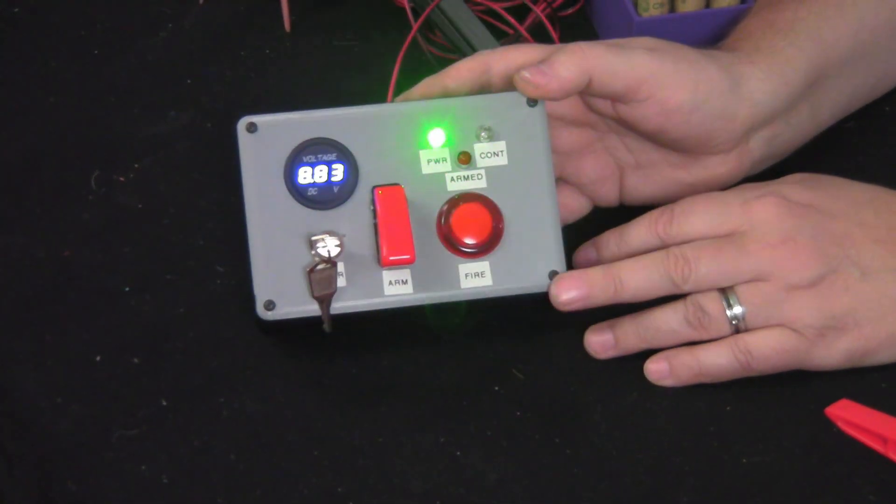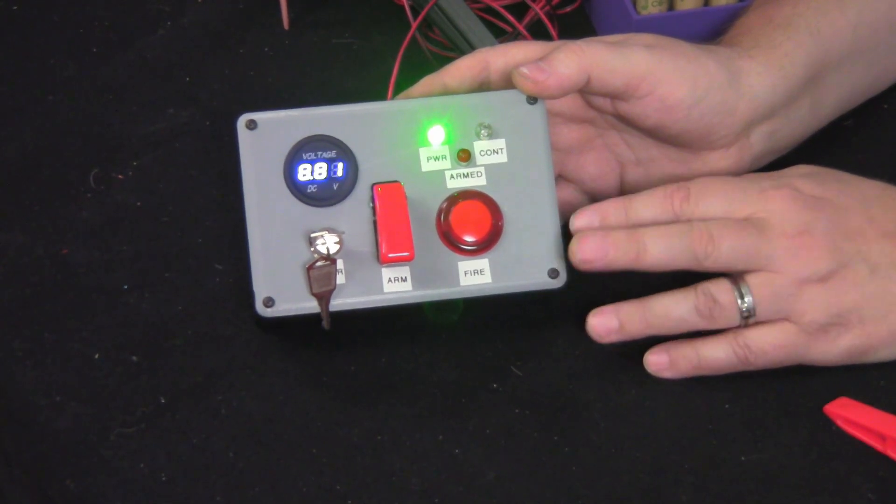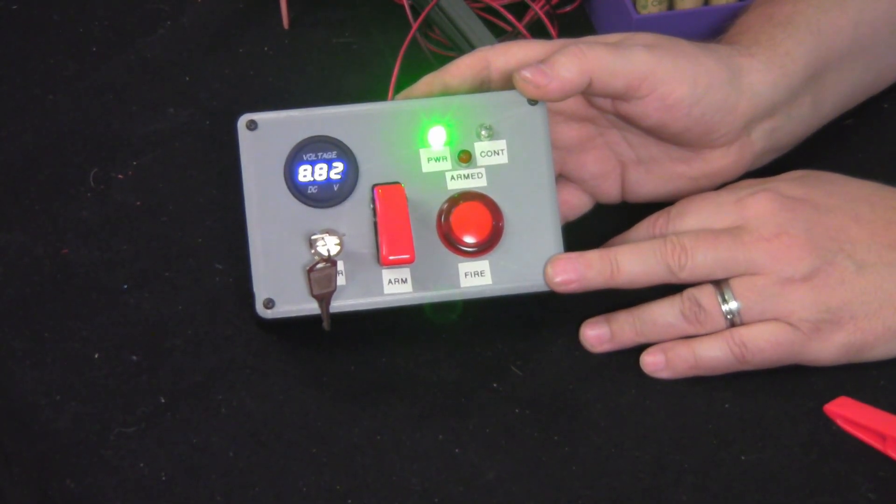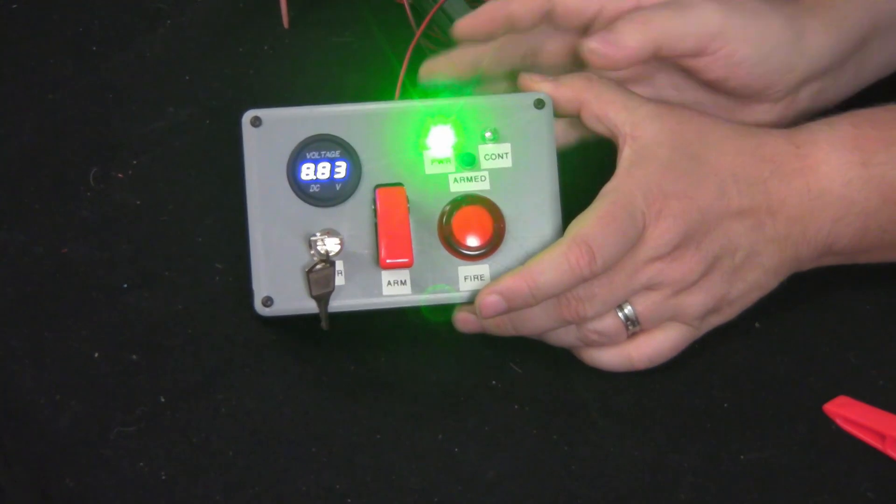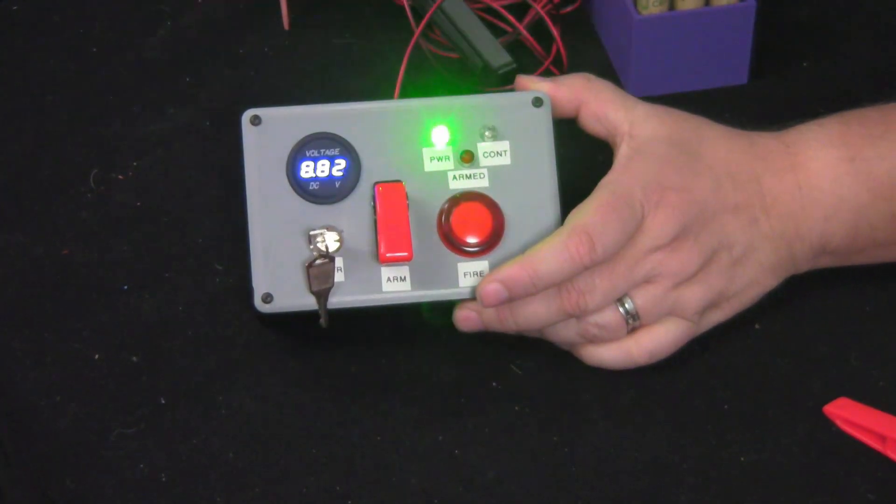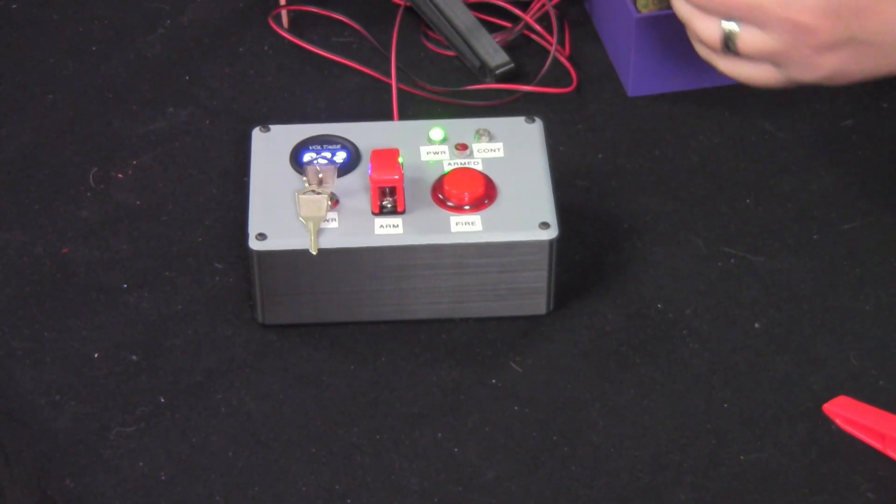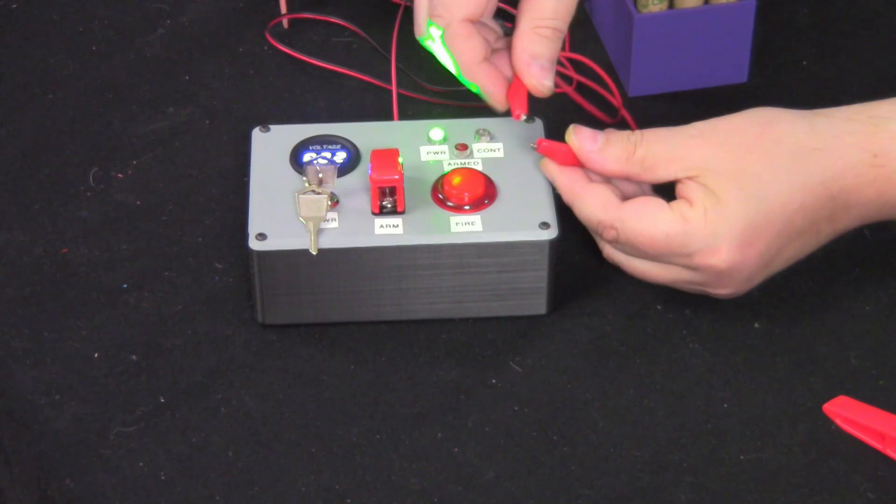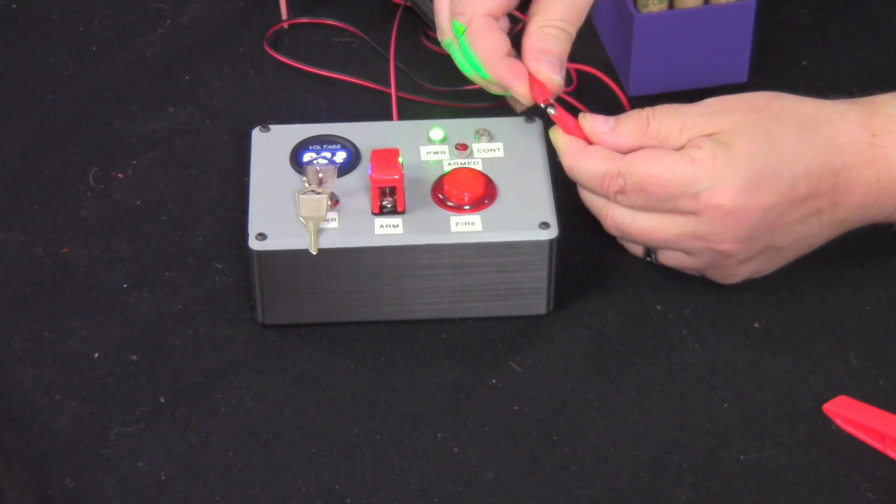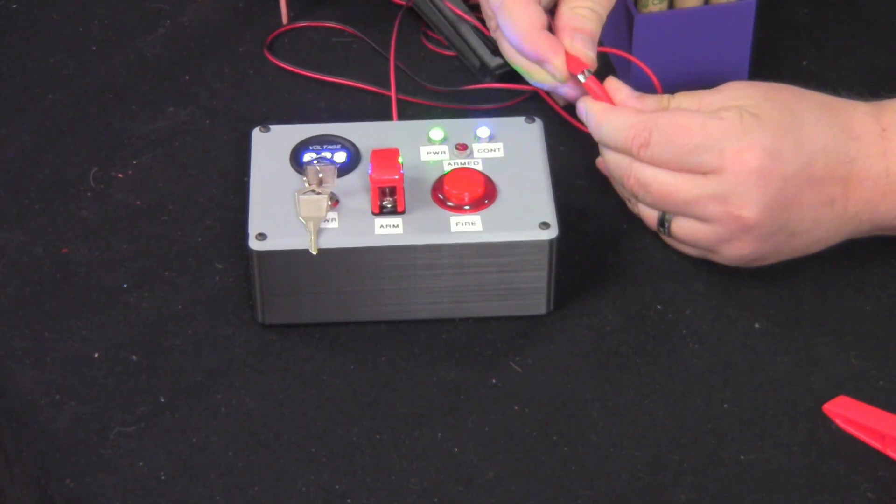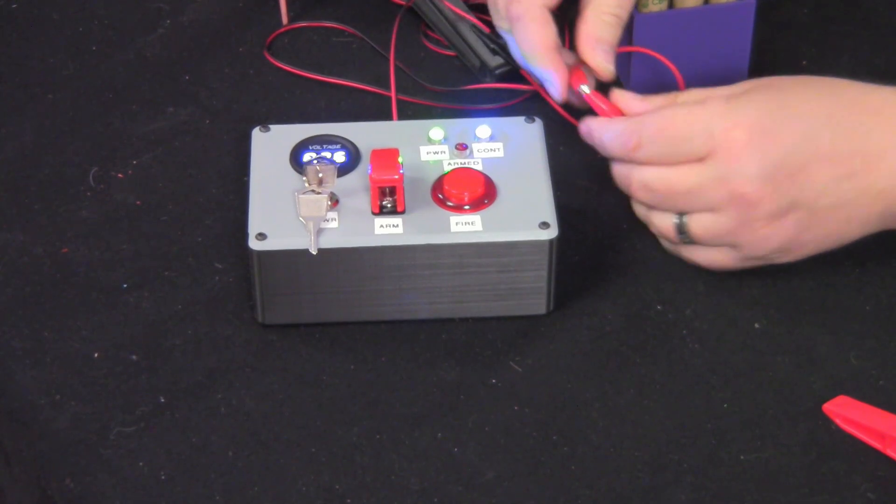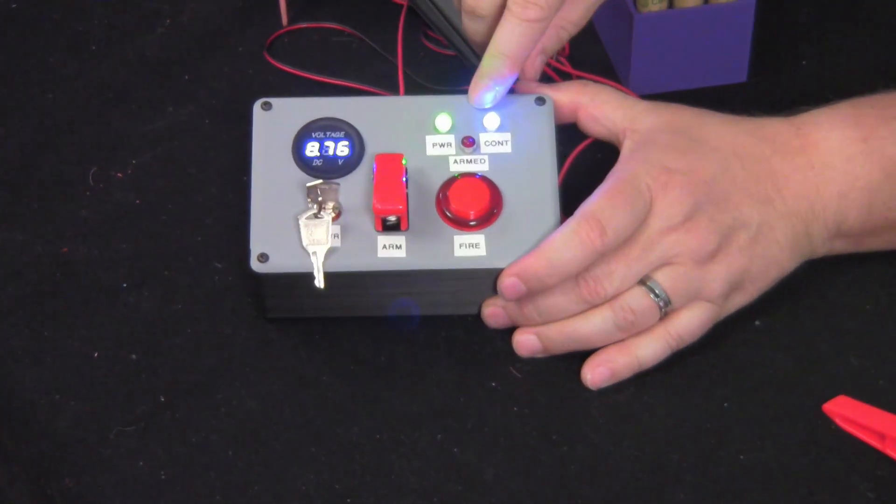That right there is indicating how much battery power we have. We have a 9-volt battery in here, which should be more than sufficient to set off the rockets that we're going to be setting off. This light right here is our continuity light. And what we need to do for our continuity is just take the two alligator clips and just put them together. And you see, once we do, we get that continuity lights light up.